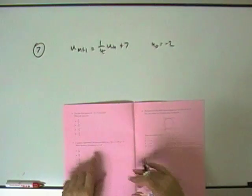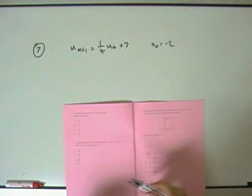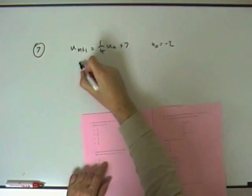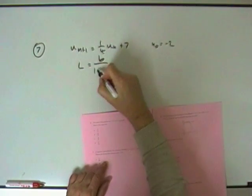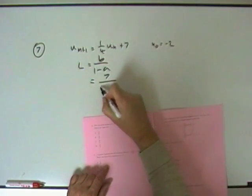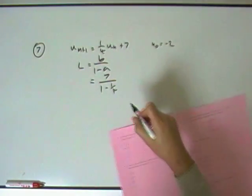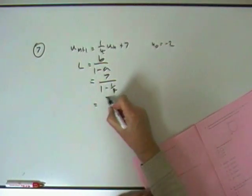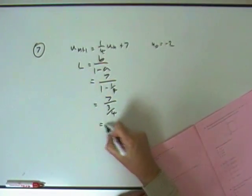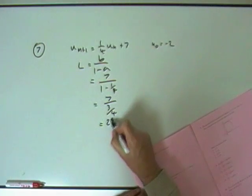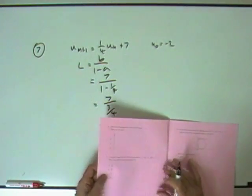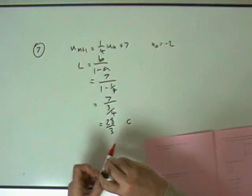Number 7. Another recurrence relation, this time it says, what's the limit? Let me just use that formula. Limit's going to be B over 1 minus A. 7 over 1 minus a quarter. 1 minus a quarter is 3 quarters. Multiply both parts by 4 to go to the fraction. 20 upon 3. 20 upon 3, that would be C.